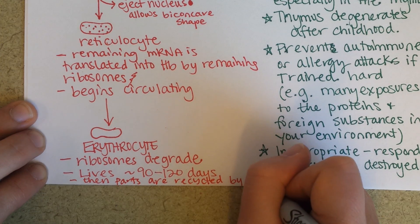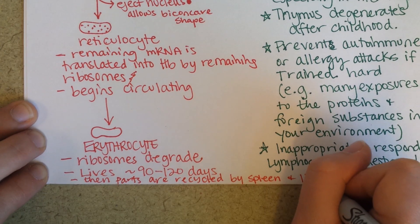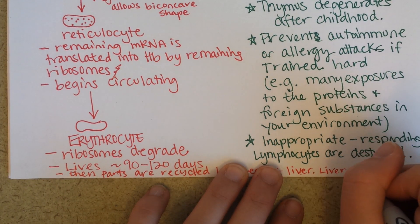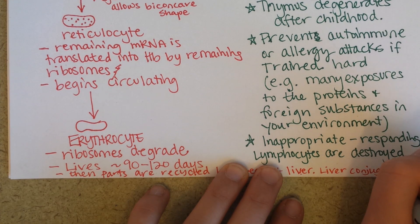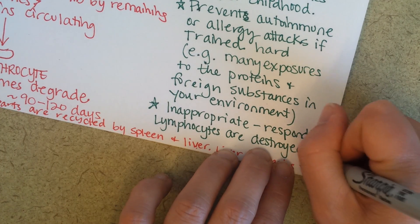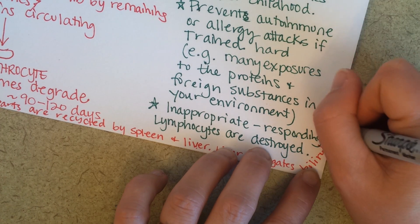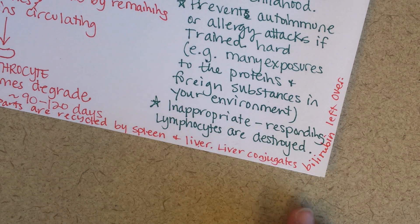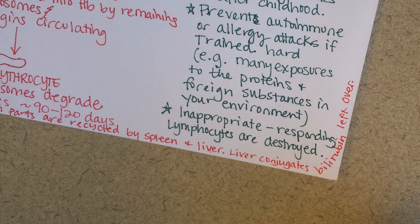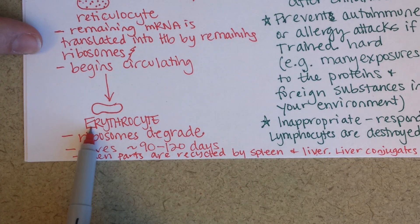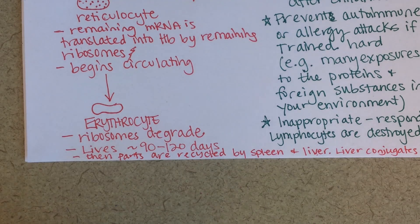The erythrocyte can live for about 90 to 120 days, then it is recycled — the parts are recycled, mostly by the spleen and the liver. Remember that the liver conjugates the bilirubin, which is an end product of this process. So if someone gets jaundiced, it's because their liver is not conjugating bilirubin appropriately. The bilirubin comes from the breakdown products of the red blood cell.